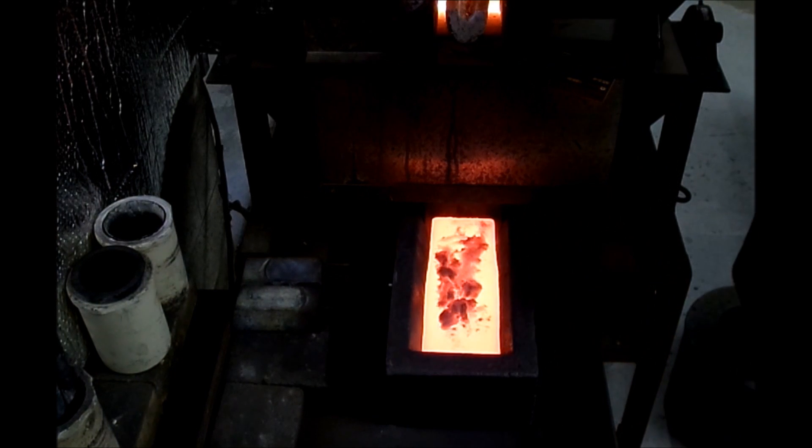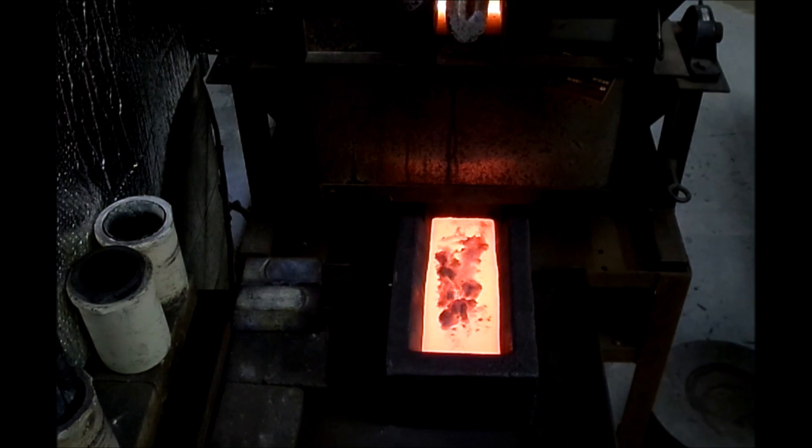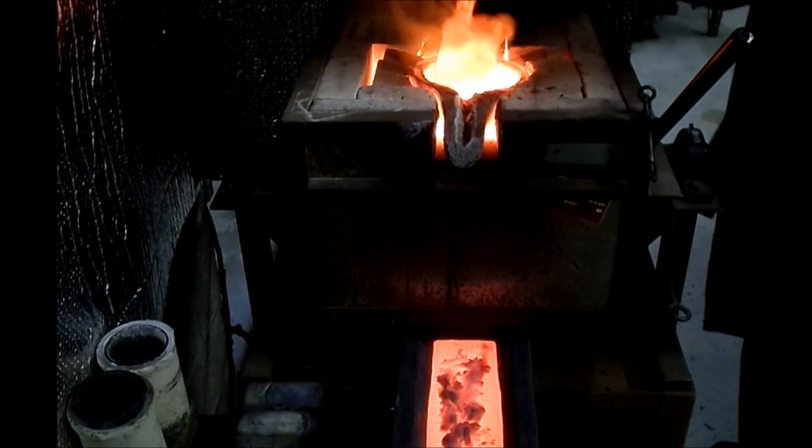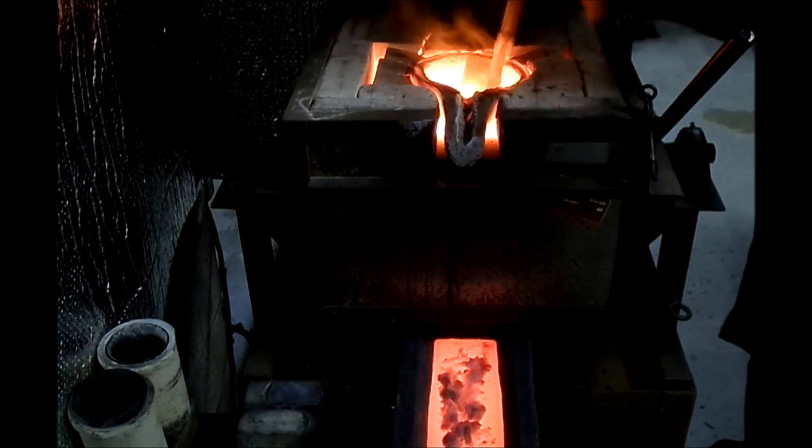While the ingot cools, some silver is stuck to the sides of the crucible. We'll loosen this with a purpose-built steel tool while the crucible is still hot enough to make recovery easy.